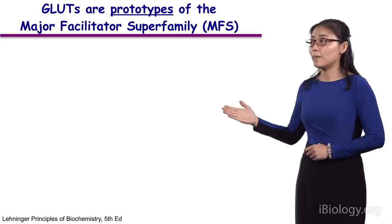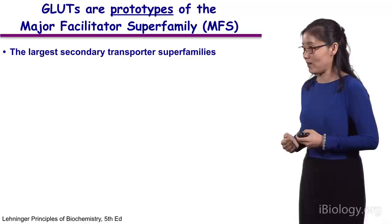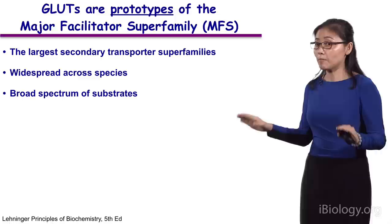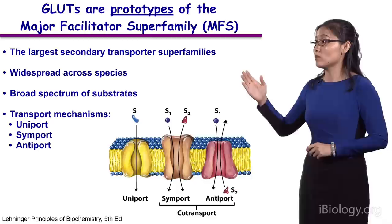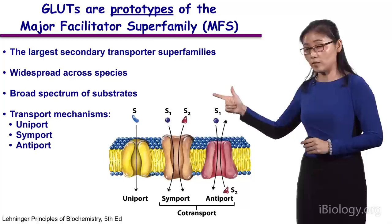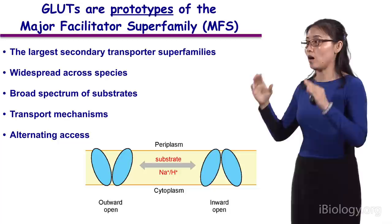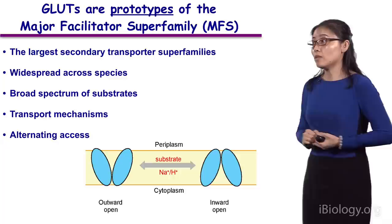As I mentioned, glucose transporters belong to the so-called major facilitator superfamily. As a matter of fact, they are the prototypes of this largest secondary active transporter family. Members in this family are widespread across species, from bacteria to human beings, and they have a very broad spectrum of substrates — from ions, sugars, amino acids, or even peptides. In terms of transport mechanism, members in this family can be uniporters, symporters, or antiporters. A general alternating access model has been proposed to account for all secondary transporters, and for MFS members this works very well.